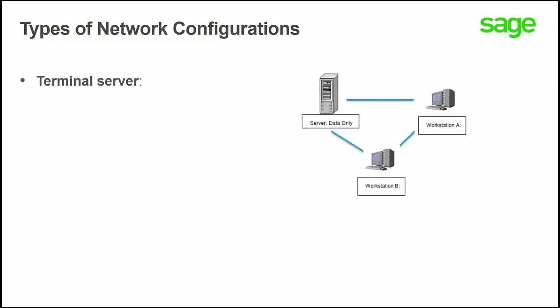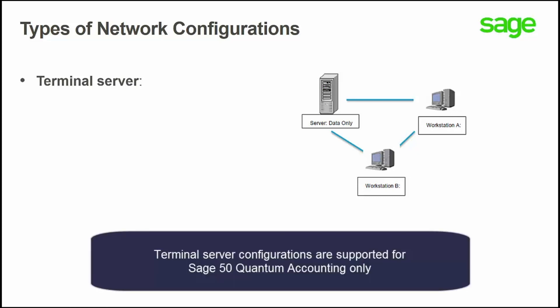The third and last type of network configuration supported for Sage50 is a terminal server configuration. In this type of environment, the programs do not need to be installed on the workstations as they will run directly from the server. Workstations will initiate remote sessions and the server will run multiple desktops for each client's request. It is important to note that this type of environment is supported with Sage50 Quantum Edition only.